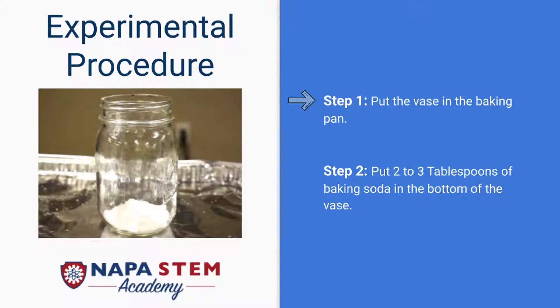Step one, place the vase on top of the baking pan. You're going to want the baking pan underneath it because if your experiment is a success, you're going to get an explosion and you want to make sure you're catching all that liquid in somewhere where it's not making a mess.